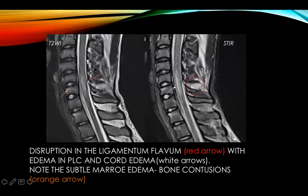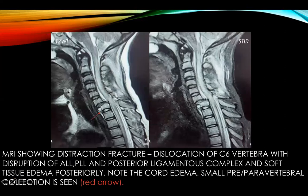In this case the vertebral bodies look normal with no evidence of obvious fractures. However, on close observation there is a breach in the continuity of the ligamentum flavum posteriorly, as depicted by the red arrow, and edema in the posterior ligamentous complex. Hyperintensity within the cord is suggestive of cord edema, and subtle hyperintensities in the vertebral body, depicted by the orange arrow, are suggestive of bony contusion.